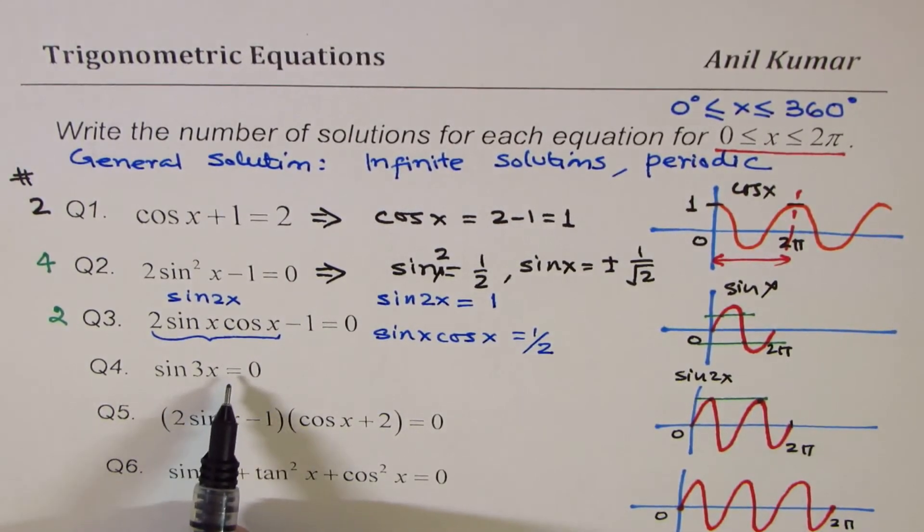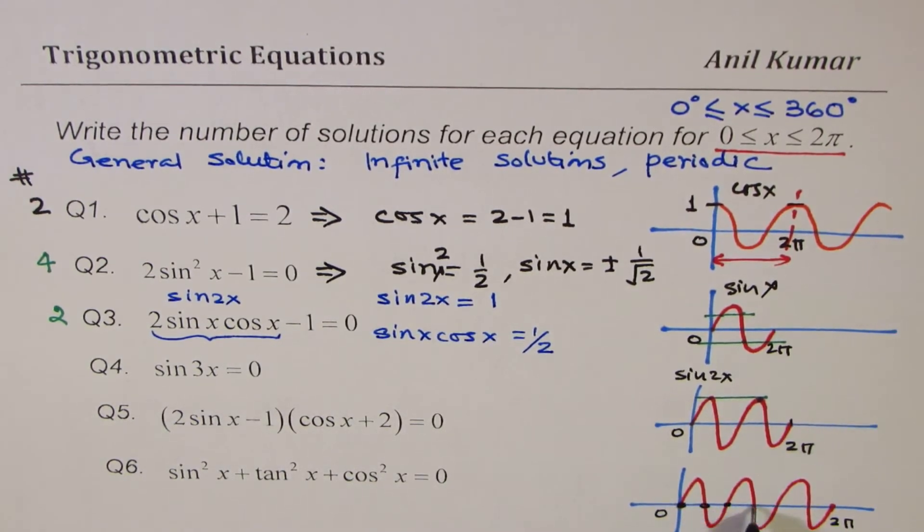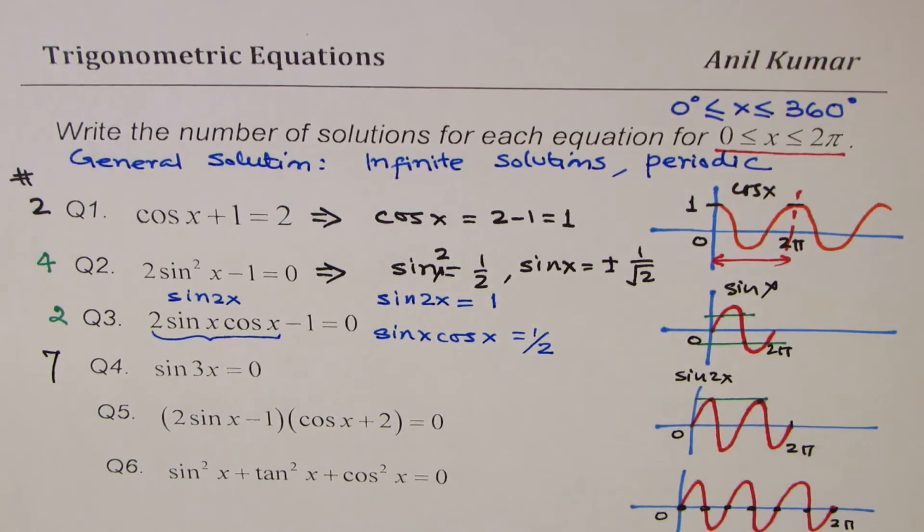We want that to be equal to 0, that means these are the zeros, the x-intercepts. You can count 1, 2, 3, 4, 5, 6, 7. So the answer is 7. Do you see that? Sketching, visualizing, and answering such questions really helps.